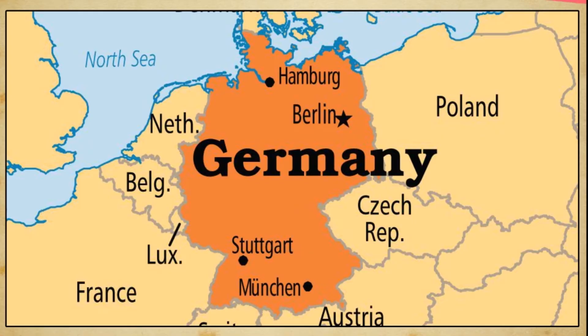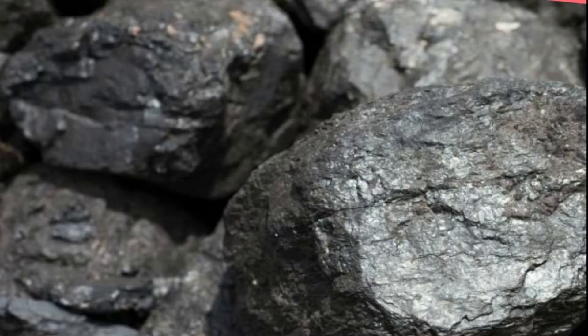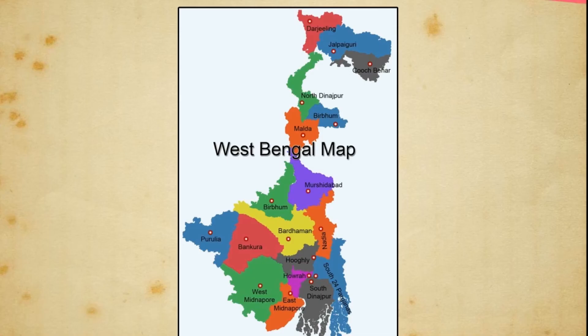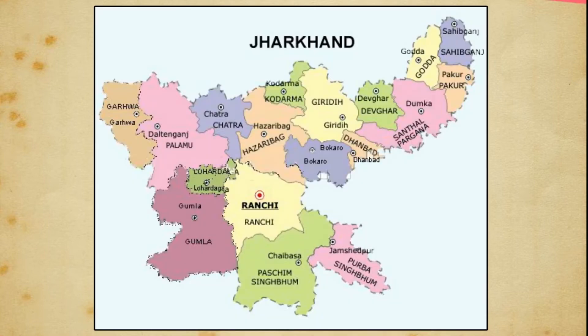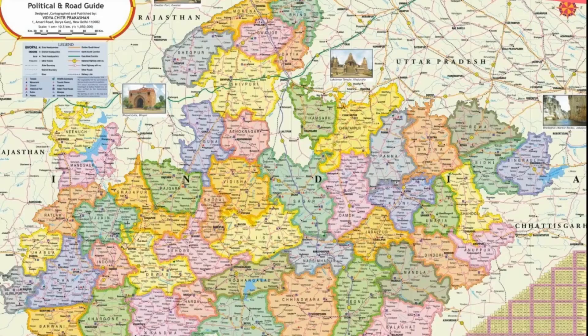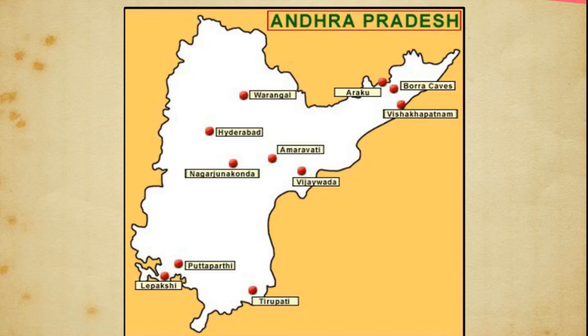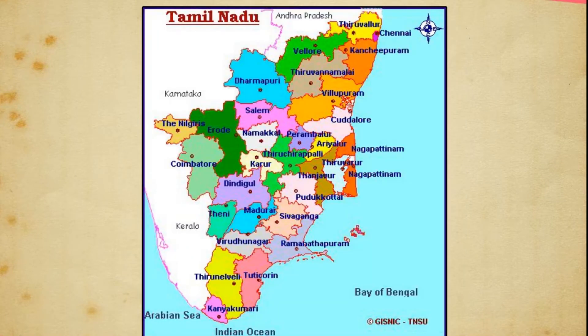The Ruhr Basin and Rhine Basin of Germany produce good quality coal. India has mostly bituminous coal. The states of West Bengal, Jharkhand, Madhya Pradesh, Maharashtra, and Andhra Pradesh are the leading producers. Lignite is found mostly in Tamil Nadu.